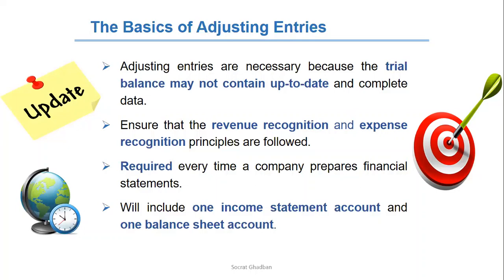Adjusting entries will include one income statement account and one balance sheet account. It means the transaction will include an income statement account because we're recognizing revenues and expenses. And because it's a double entry system in accounting, it will also affect the assets, liabilities, or even the owner's equity accounts.